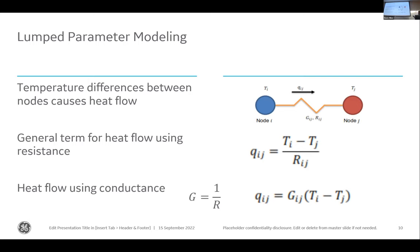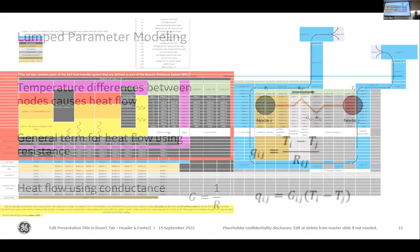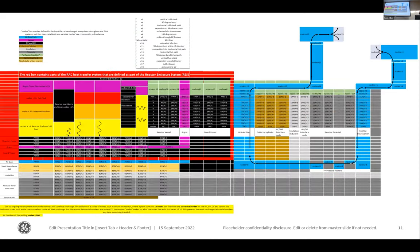This is a lumped parameter modeling system where we have a node here, a node there, and some conductance between them. That conductance is determined by heat transfer equations — radiation, conduction, convection — and we get everything down to a simple G term, which is our conductance, the inverse of resistance. That allows us to simplify the analysis quite a bit and look at a simple delta T and the energy in and out of any given node.